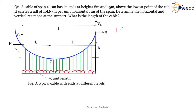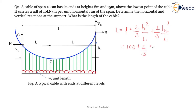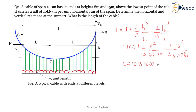The length of the cable formula is: L_cable = L + (2/3)(h1²/l1) + (2/3)(h2²/l2). Substituting: 100 + (2/3)(8²/42.214) + (2/3)(15²/57.786) = 103.607 m. So the total length of the cable is 103.607 m.